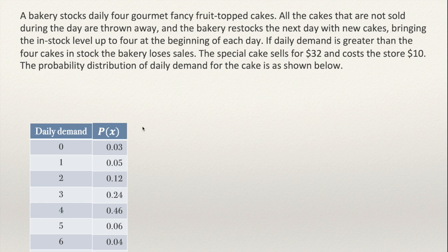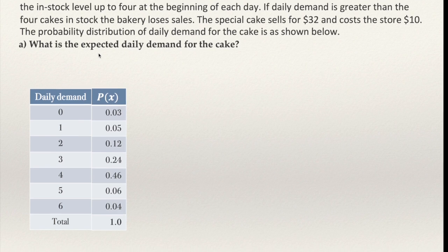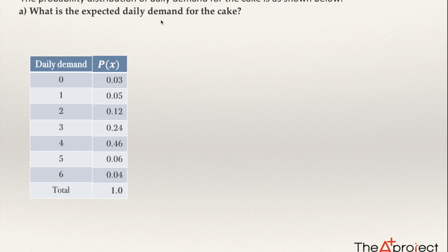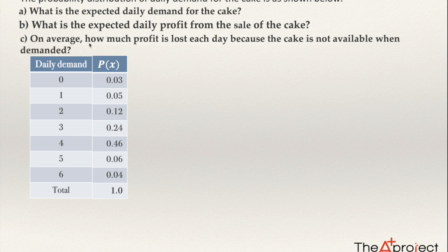With this information I want to solve three questions. The first question is: what is the expected daily demand for the cake? This is a straightforward question and easy to solve. More interesting are the other two questions — for example, what is the expected daily profit from the sale of the cake. And finally, question C: on average, how much profit is lost each day because the cake is not available when demanded? For example, there is a 4% probability that customers demand six cakes.